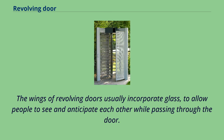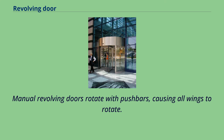The wings of revolving doors usually incorporate glass to allow people to see and anticipate each other while passing through the door. Manual revolving doors rotate with pushbars, causing all wings to rotate.